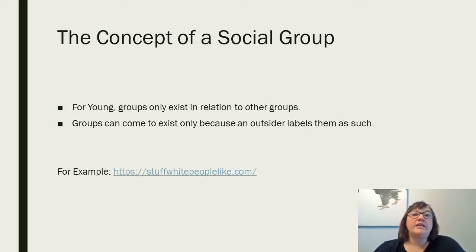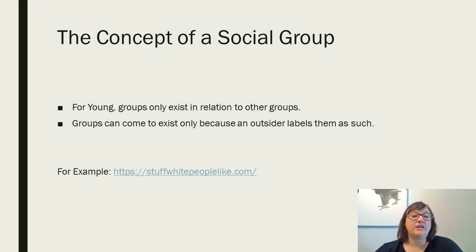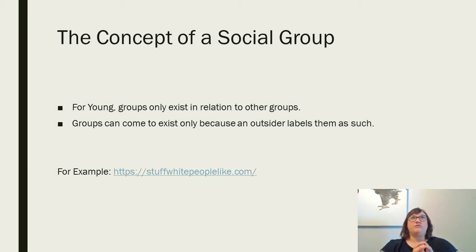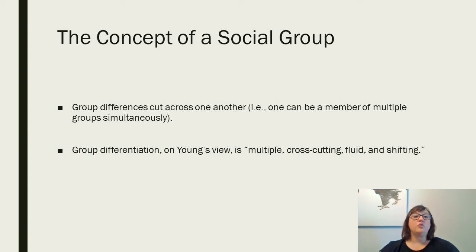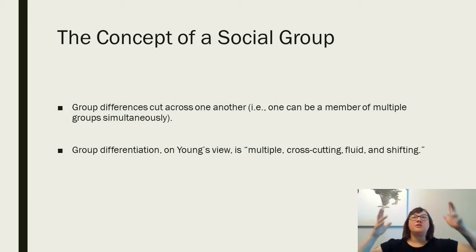Young actually thinks that group identity forms individual identity. You can't have an identity as an individual unless you are already part of a group. For Young, groups only exist in relation to other groups — they can come to exist only because an outsider labels them as such. Group differences cut across one another, meaning one person can be a member of multiple groups simultaneously. Group differentiation is multiple, cross-cutting, fluid, and shifting — it's not a fixed model.